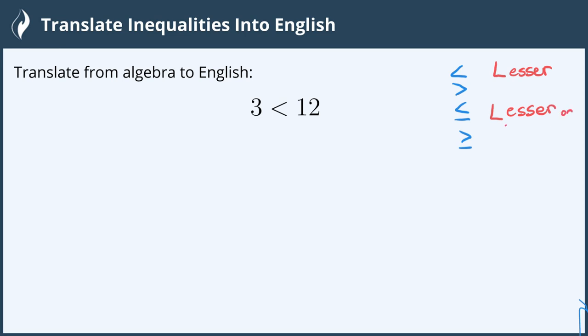And if it's in the direction that is opposite of an L, this is the greater than sign. If it has a line under it, it is the greater than or equal to sign.